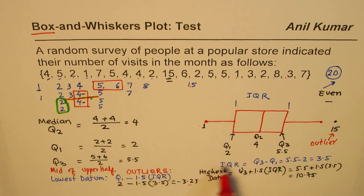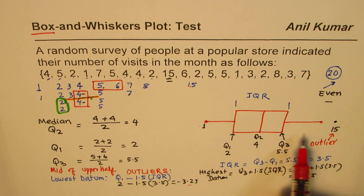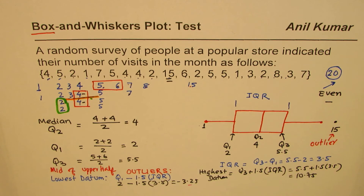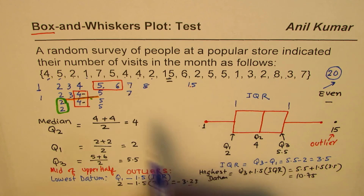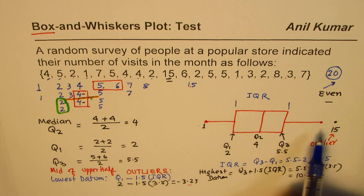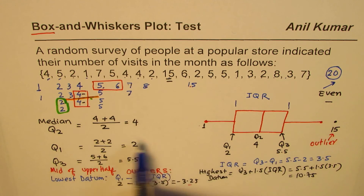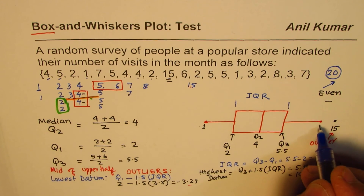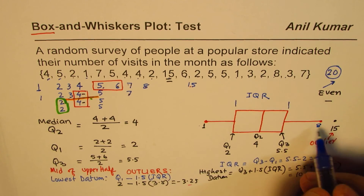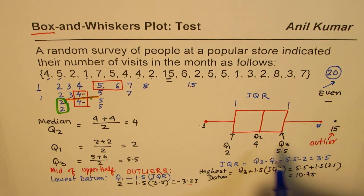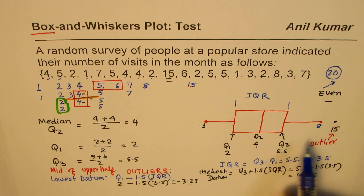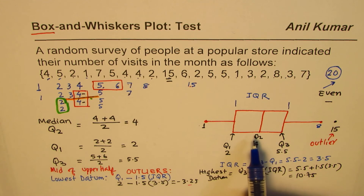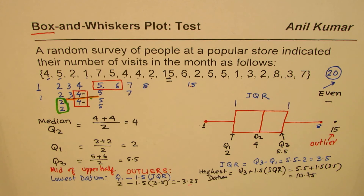The upper whisker extends to the highest value within the upper bound of 10.75. Looking at our data, that value is 8. So the right whisker ends at 8, and 15 is plotted separately as an outlier. That completes the box and whisker plot.